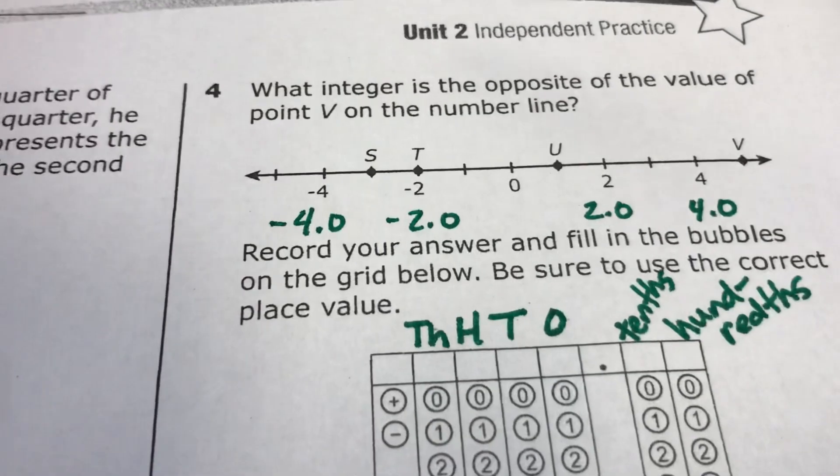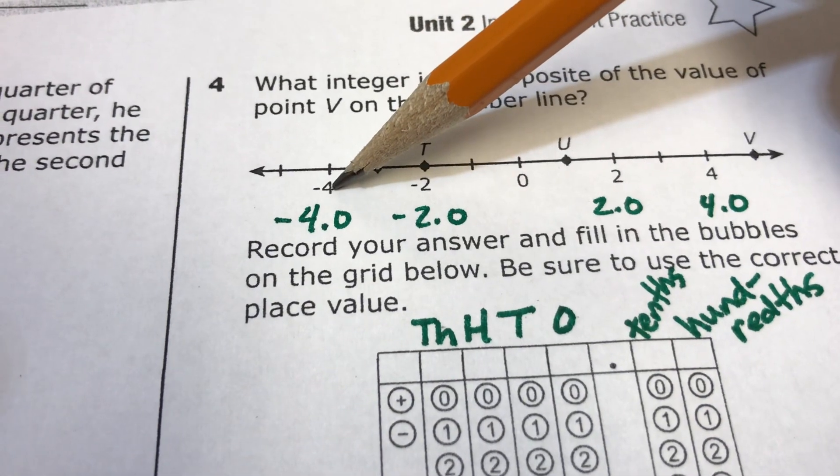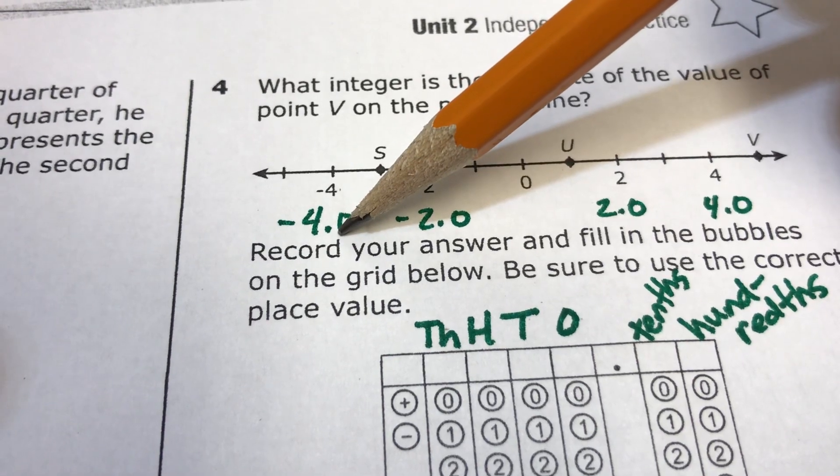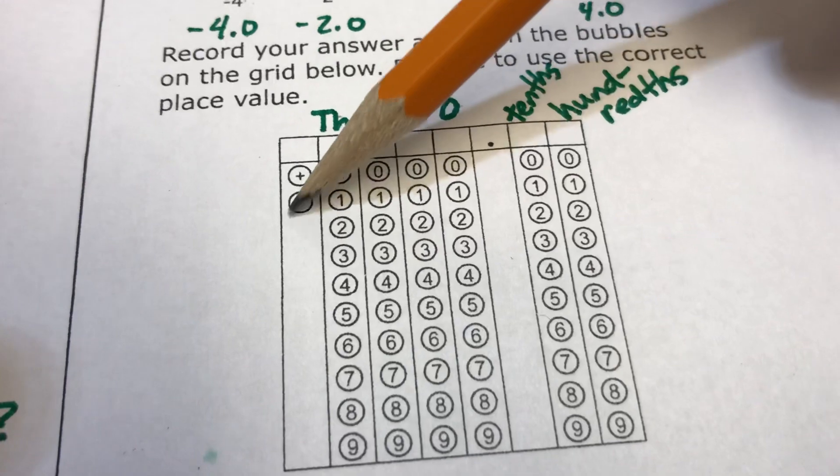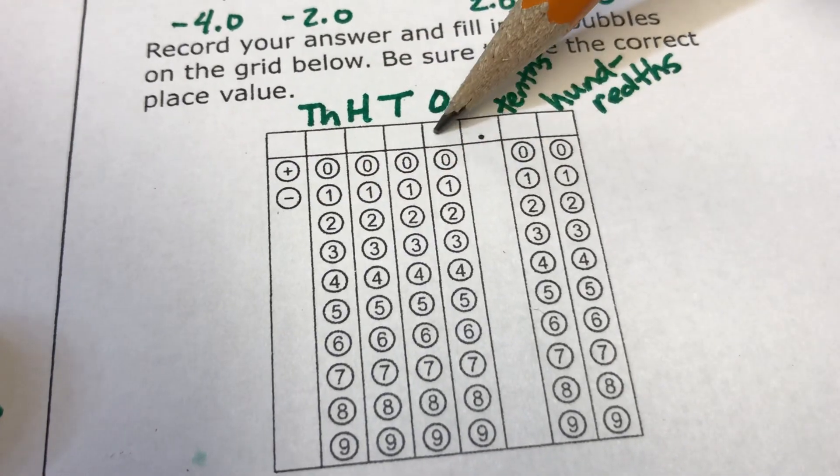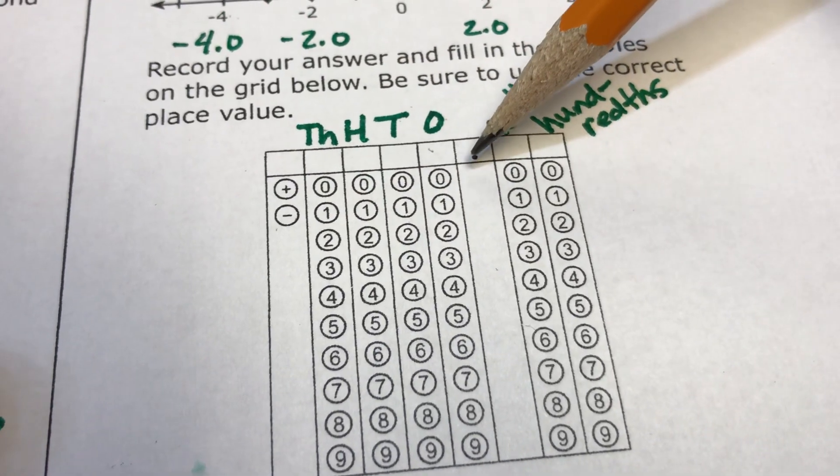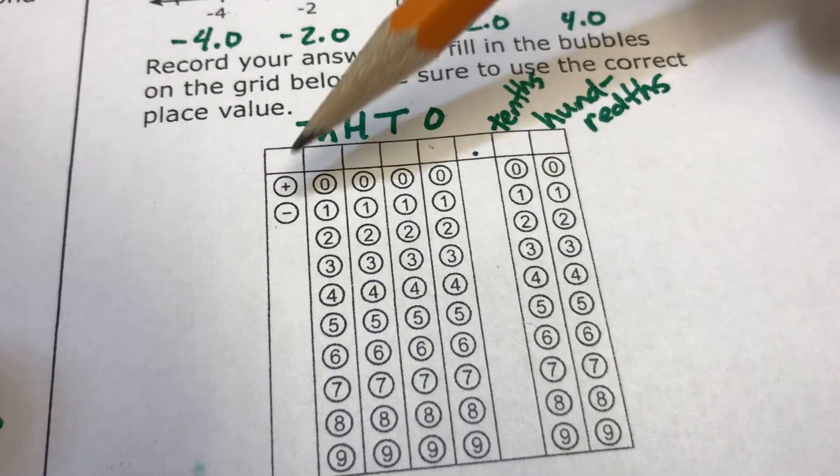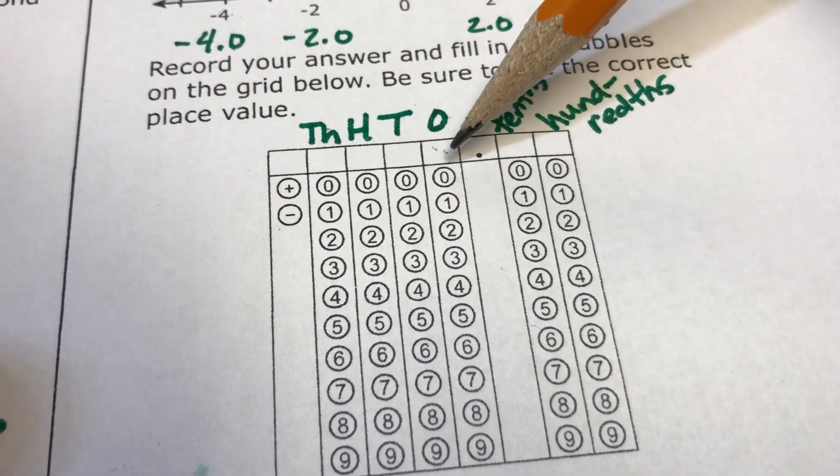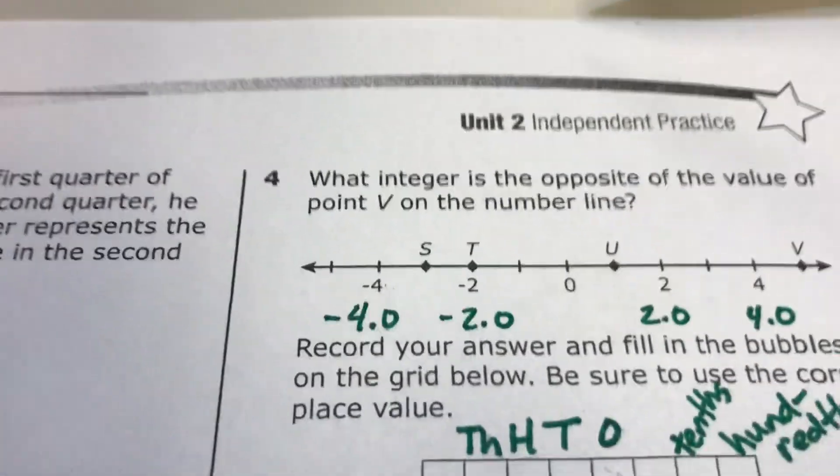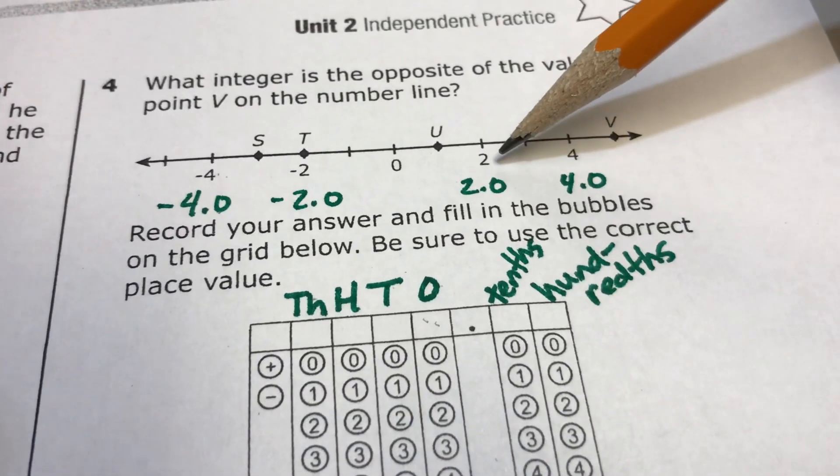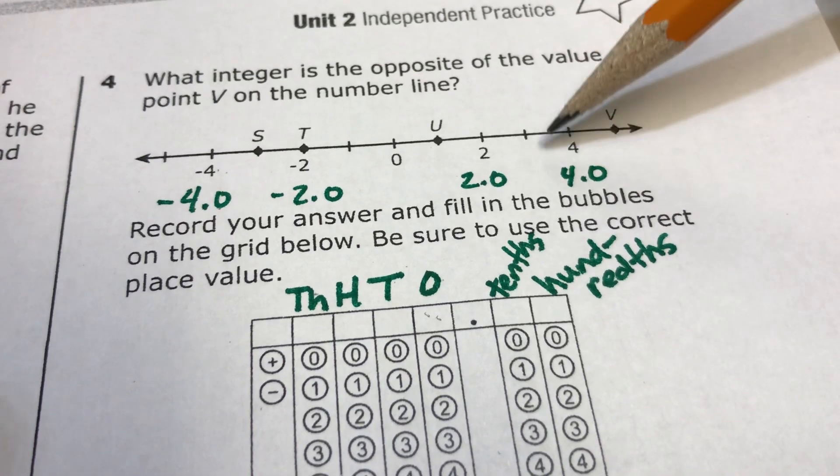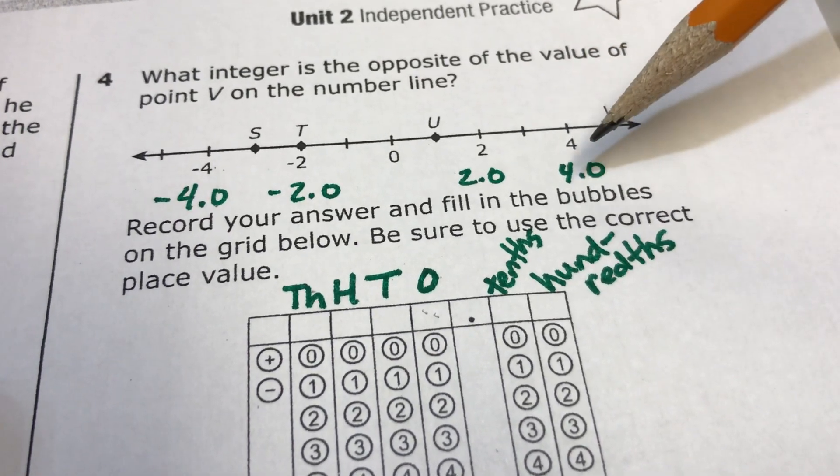So you got to remember if like a number like negative four, it's the same thing as 4.0. So if you thought the answer was negative four, then it would be bubble a negative, put your four here, and then that would be like 0.0. You don't have to put the 0.0, you could just do negative four if you thought the answer was negative four. Same thing here, negative two is just like negative 2.0. It's just the same. It's the same with positive numbers, 2, 2.0, 3, 3.0, 4, 4.0, etc.